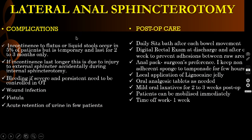What are the complications of lateral internal sphincterotomy? Incontinence is the commonest complication — this may be for flatus or liquid stools and occurs in 5% of patients, but it is temporary and lasts for 2 to 3 months only. If incontinence lasts longer, this may be because of injury to the external sphincter occurring accidentally during internal sphincterotomy. Bleeding is another complication and if severe and persistent, it needs to be controlled in the operating theatre. Wound infection can occur in 1% of patients. Fistula is a rare complication. Some patients can also develop acute retention of urine.